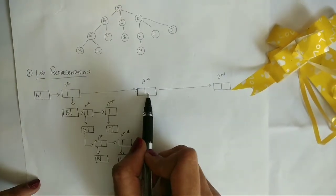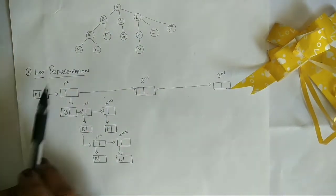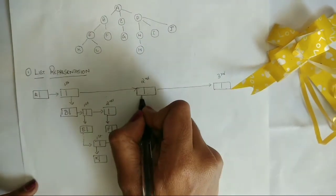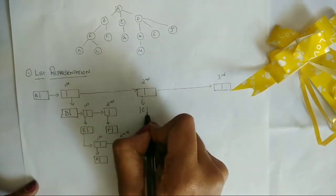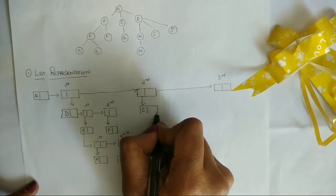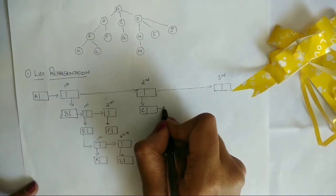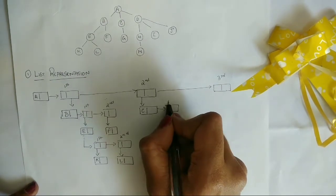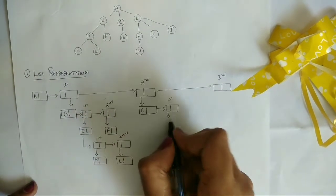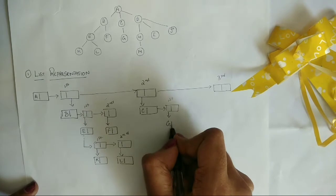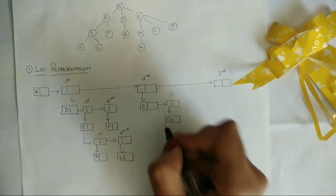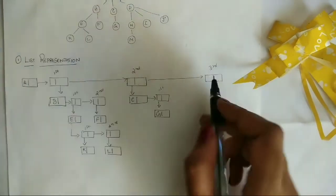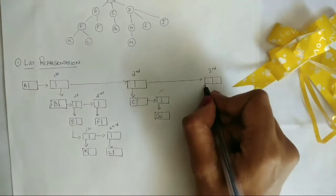Now for the second child node of A, which is C. Let's point C out there. C is having only one child — that is the first child — and that is G. Moving on to the third node.